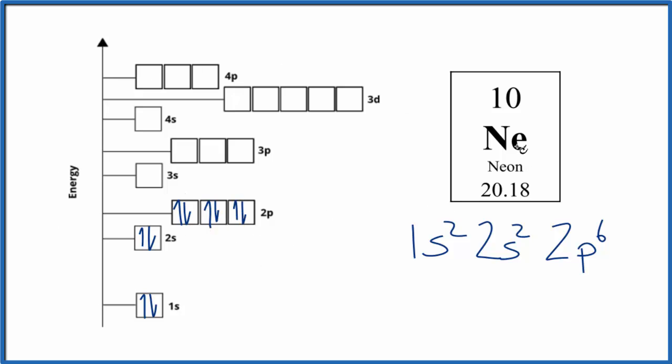And this is the atomic orbital diagram for neon. You can see the second energy level here is full. Neon's a noble gas, so that's very stable. Sometimes you'll see it written like this as well, so it's the same thing.